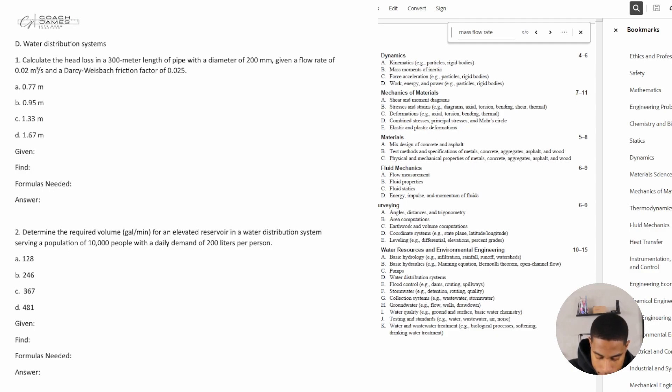All right, so let's go ahead and dive right in. Number one says: Calculate the head loss in a 300-meter length of pipe with a diameter of 200 millimeters, given a flow rate of 0.02 meters cubed per second and a Darcy-Weisbach friction factor of 0.025.